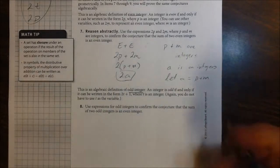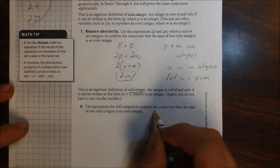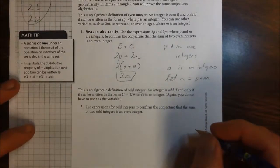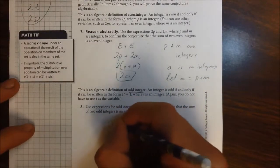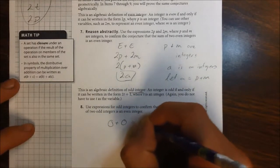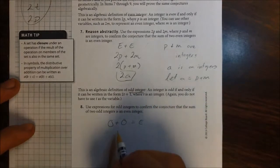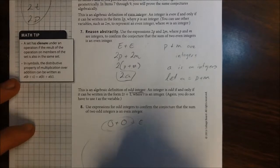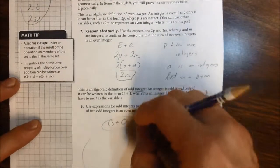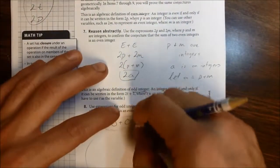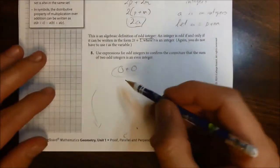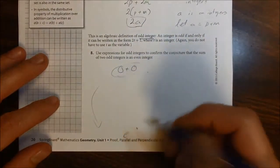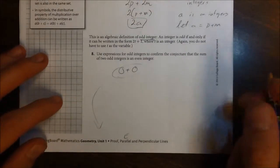So, item 8 says use the expressions for odd integers to confirm the conjecture that the sum of two odd integers is even. So what we're trying to go for now is odd plus odd equals even. I'm going to start with this expression and work my way down to try to get to an even, to try to take this expression and manipulate it so that it eventually is in the form of an even integer.